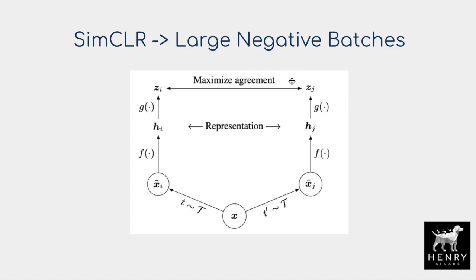The key insight in SimCLR is that larger batches make this work well. Say you have a dog image, then a rotated dog and a horizontally flipped dog, and then a large batch of cats, other dogs, cars, and trucks. The InfoNCE (noise contrastive estimation) loss has an exponential similarity term between the two augmented images on top, and a normalized sum over all similarities with the entire batch on the bottom. The SimCLR paper argues that scaling up the network size and batch size is the key to making contrastive learning work well.